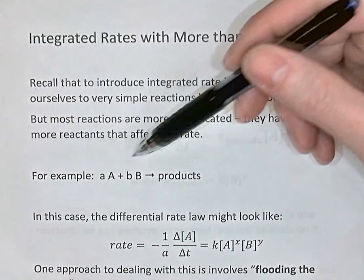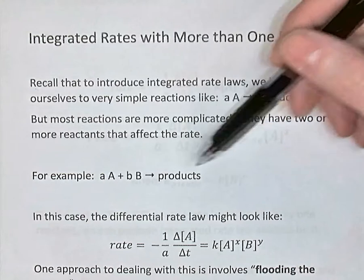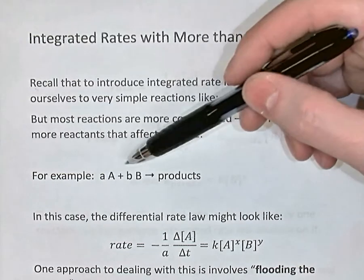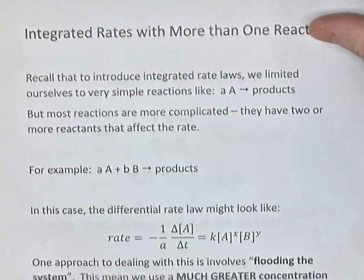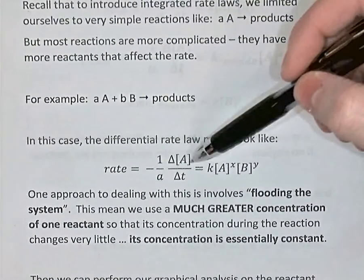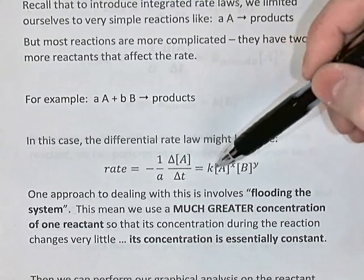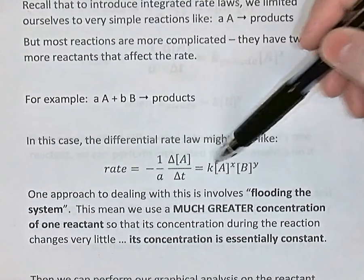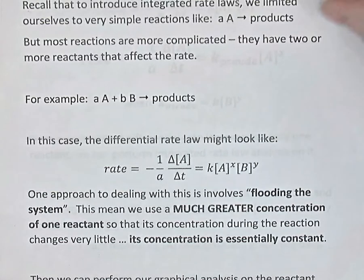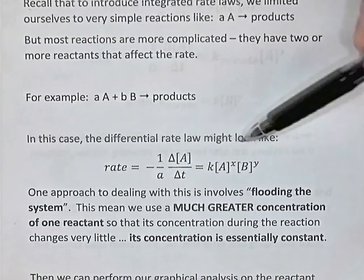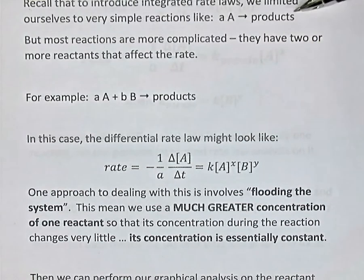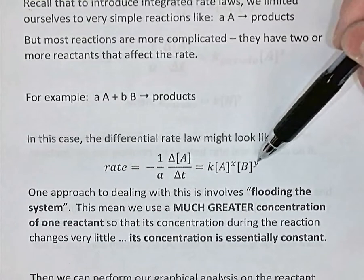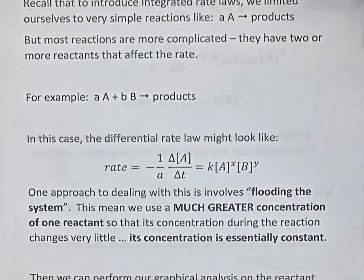For example, here's a reaction with A moles of A and B moles of B making products, so the rate depends on both A and B potentially. The rate law measured in terms of the change of A over time would look like K times A to the X times B to the Y. When doing an integrated rate law approach, you can only have one reactant changing concentration at a time so you can graph it and do graphical analysis. But with two reactants potentially changing over time, there's the problem.